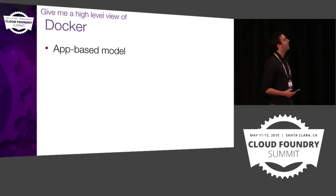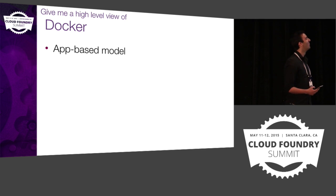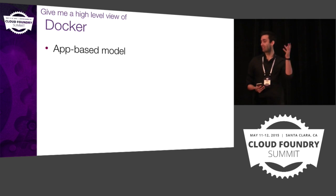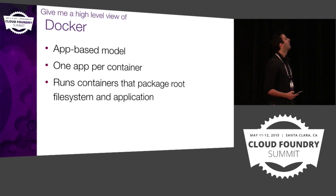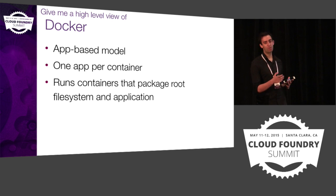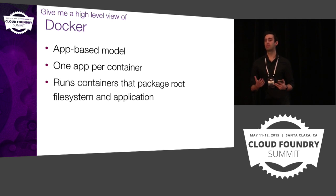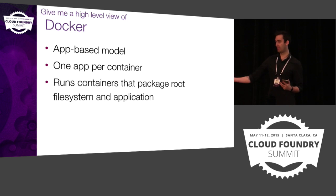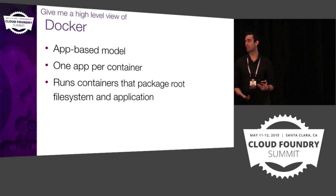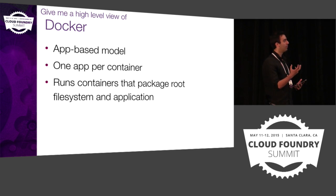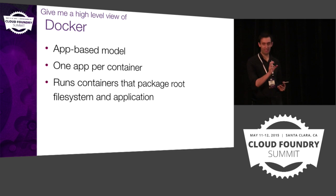A high-level view of Docker: Docker is obviously an app-based model, which doesn't stop you running multiple processes within it, but its main model is one app per container. In general, containers package your root file system with the application. A Docker image doesn't separate the image from what runs in it — the metadata includes what should run, who should run it as, what its home directory is, et cetera. It's quite a tightly coupled thing, which is really great for a user: you've got your thing and you know how to run it, it runs the same everywhere.